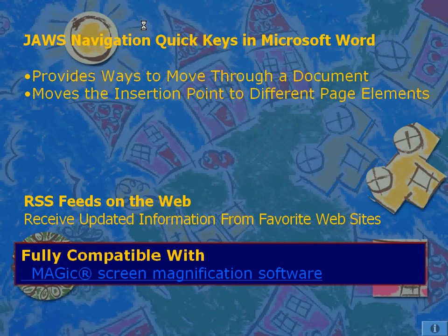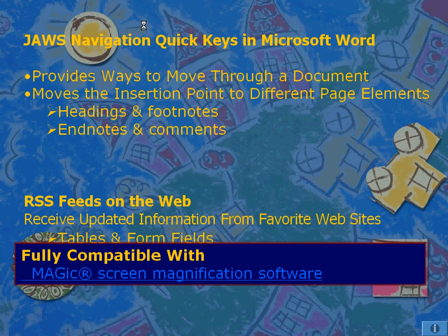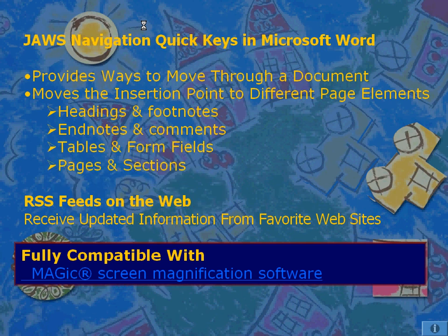With the JAWS navigation quick keys in Microsoft Word, a student is provided with ways to move through a document, as well as move to different page elements such as headings, footnotes, endnotes, comments, tables, field forms, pages, and sections. JAWS is also fully compatible with the MAGIC screen magnification software.